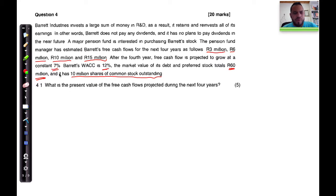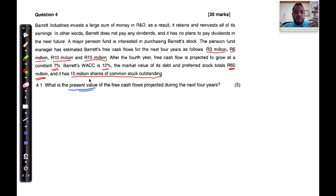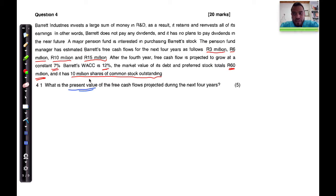For question 4.1, we're not going to worry about the ten million shares outstanding or the sixty million in debt and preferred stock, because the question relates to the free cash flows and we need to present value them. When we find the present value of something, we call this process discounting. In other words, we're asking: what is the value of that fifteen million rand today?